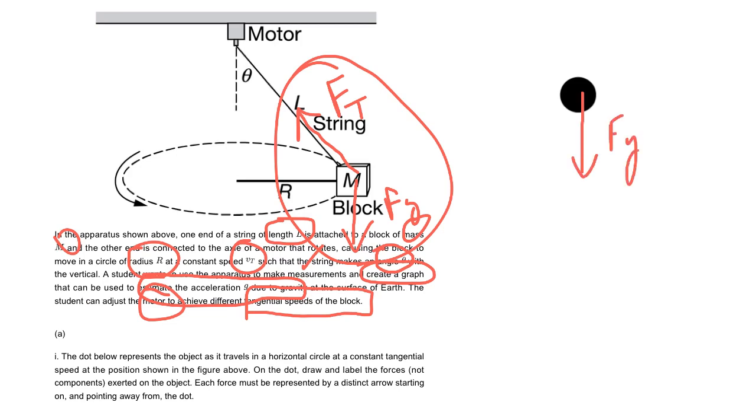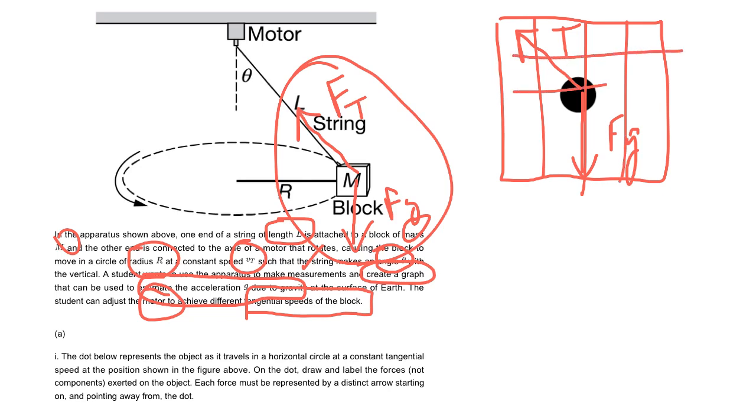On any FBD you do, you want to see if they're asking for it drawn to scale. In this case no, they didn't say anything about it. Typically when they want it drawn to scale they're going to give you a little grid. If we were to draw this to scale, the key idea is that the amount of tension going up should be balanced out with this force of gravity. So this length and this length should essentially be the same.